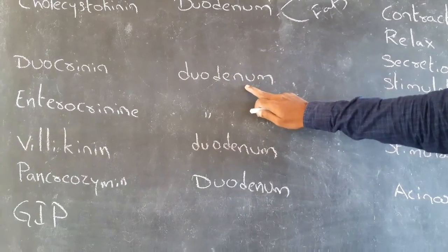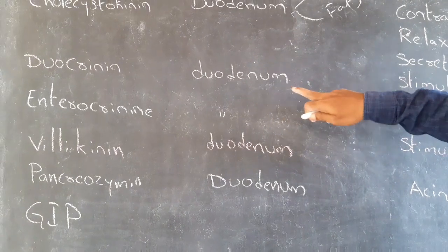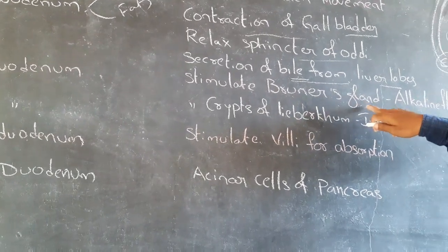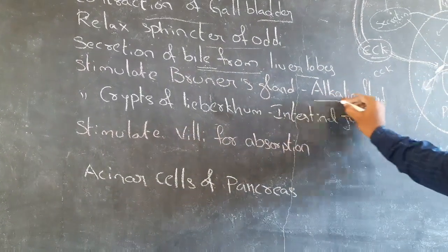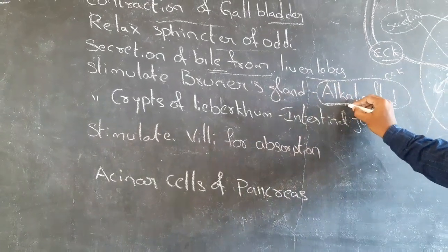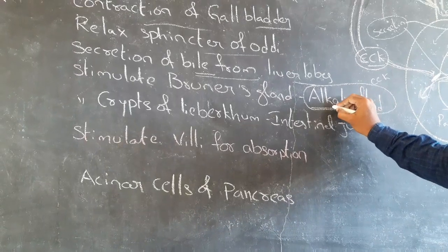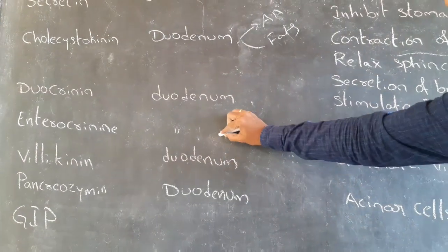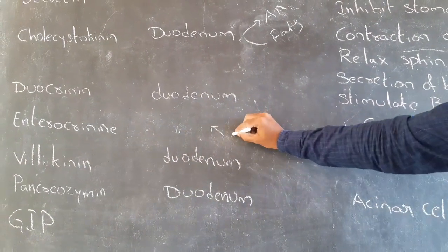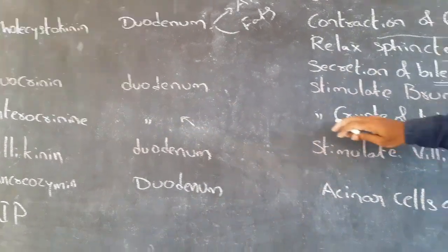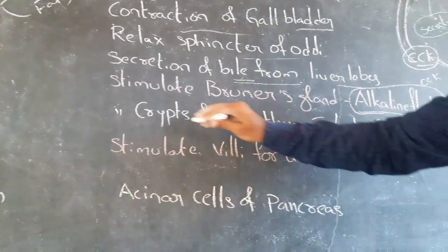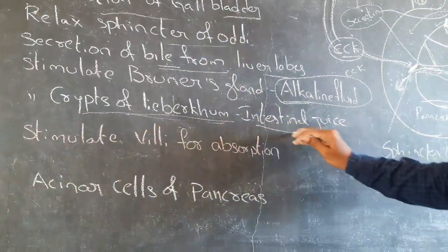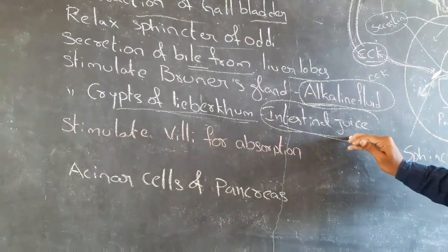Duocrinine is released from the duodenum and stimulates Brunner's glands, which secrete alkaline fluid. Enterocrinine is also released from the duodenum; it stimulates the crypts of Lieberkühn to secrete intestinal juice.